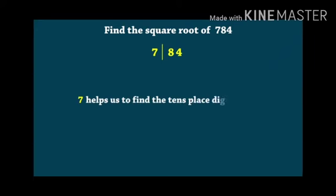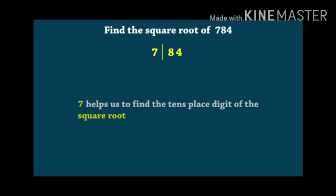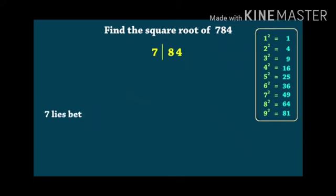7 helps us find the tens place digit of the square root and 84 will tell us the units digit. Now, 7 lies between 4 and 9, isn't it so?